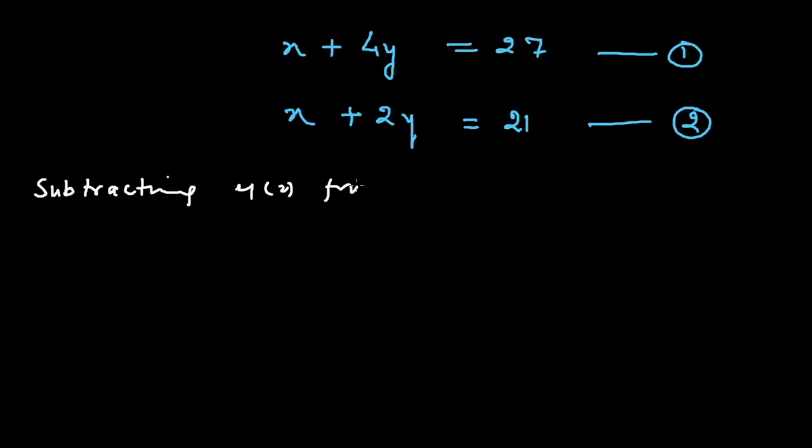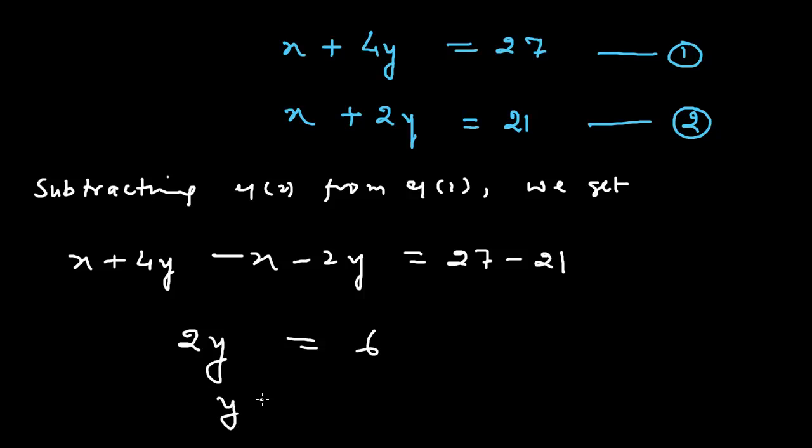We get X plus 4Y minus X minus 2Y equals 27 minus 21. This means 2Y equals 6, which means Y equals 3.